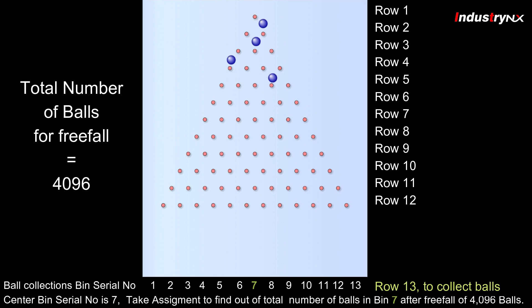Let us assume now we have 12 rows of pegs as shown and total 4096 balls for free fall. Assume we have total 13 collection bins and 13th row to collect all balls. Let us take a small assignment to find out number of balls at center bins and other bins after completion of free fall of 4096 balls.